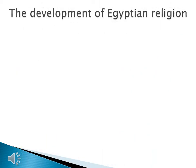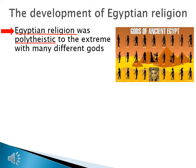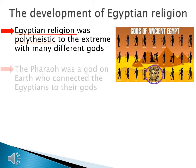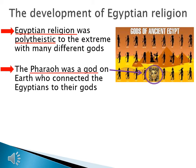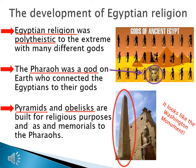The religion of the ancient Egyptians is almost as complicated as the Egyptian class system. The Egyptian religion was polytheistic to the extreme, with many different gods — just on that chart there are 27 different gods, including the pharaoh. The pharaoh was a god on earth who connected the Egyptians to their gods, holding ultimate religious authority as the only one talking to the gods. We also have buildings that come from the religion: pyramids and obelisks are built for religious purposes and as memorials to the pharaohs. Look at the obelisk — it's the thing that looks like the Washington Monument — so we have a little bit of ancient Egyptian civilization here in our own civilization.